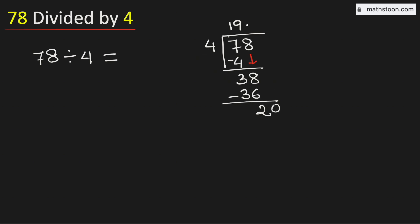Now we know that 4 times 5 is 20. Subtract, we get a 0. As we have obtained the number 0, so we will stop.